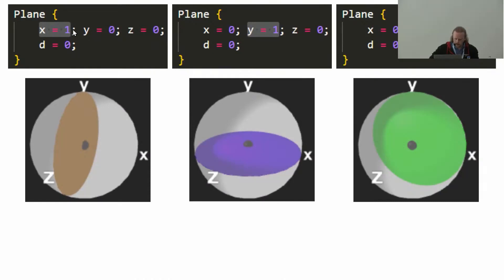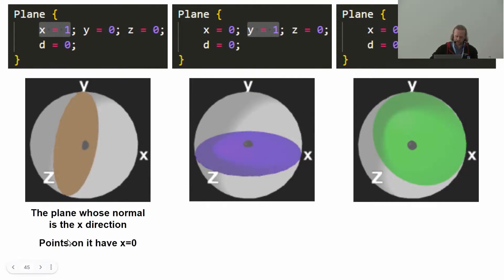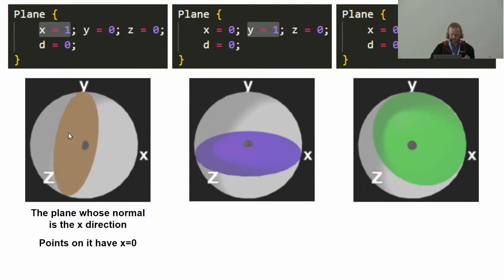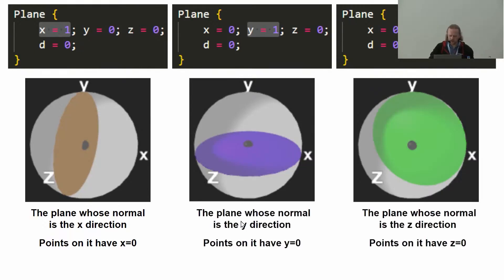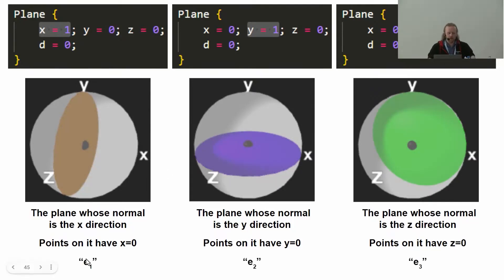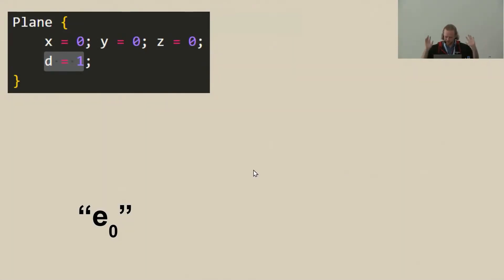Here we've got our basis planes: X plane, Y plane, Z plane. The X plane is the plane whose normal is in the X direction; points on it have X equal to zero, and the plane is described by X equals one. The Y plane has normal in the Y direction — points on it have Y equal to zero. These also get called E1, E2, and E3 in geometric algebra, but in video games we just say X, Y, Z.